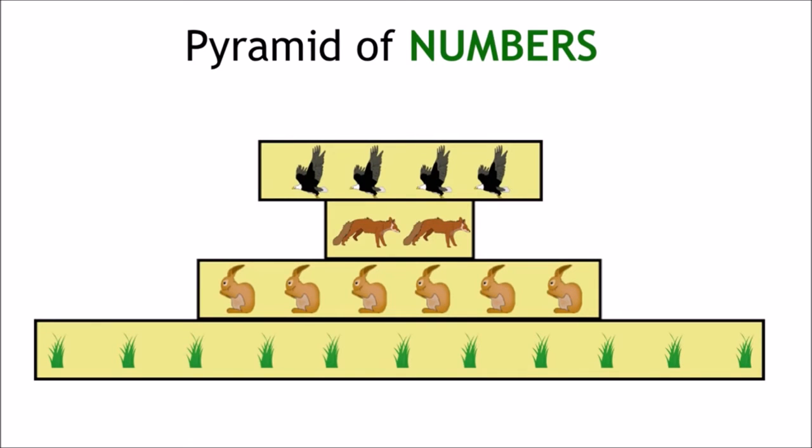As you can see in this example, thousands of blades of grass are eaten by lots of rabbits. That then feeds very few foxes. These foxes will then feed a larger number of eagles. The more organisms there are, the wider the bar is.